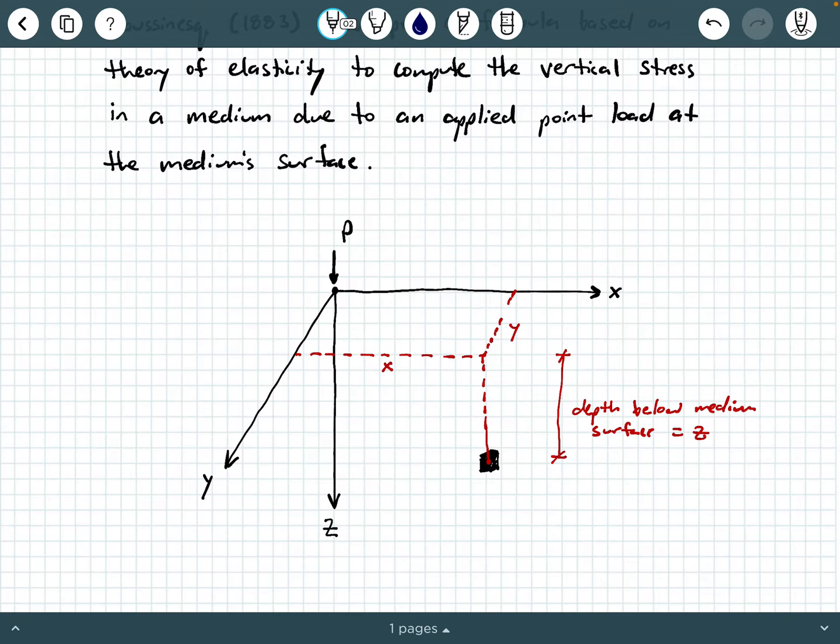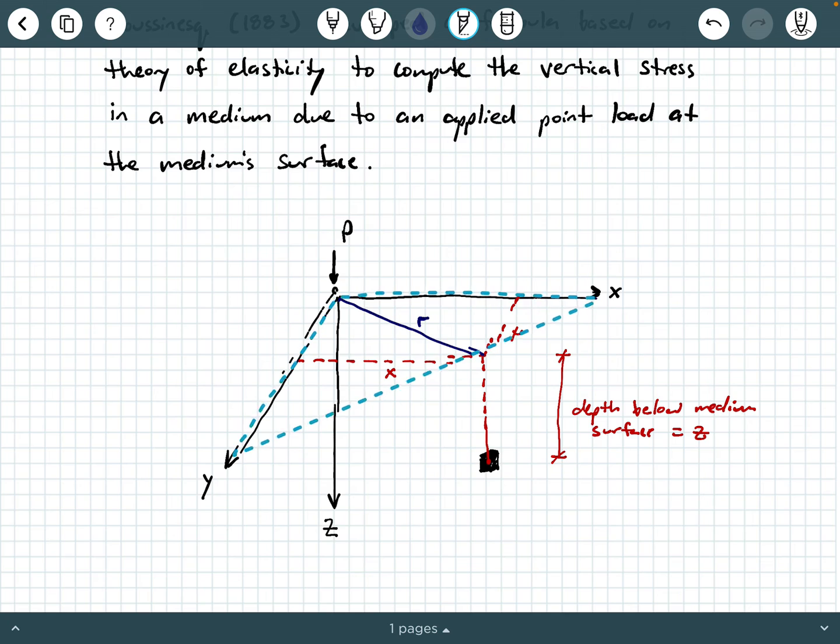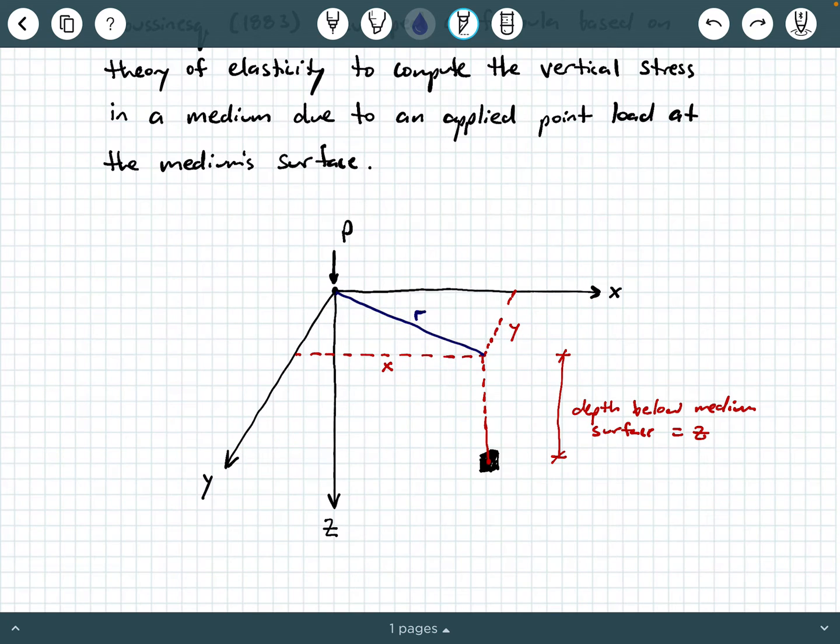Now, we're going to define a radial distance that's in the xy plane right here. We're going to call this r. So r, again, is a radial distance that's in the xy plane, so it's actually in two dimensions. And we're going to define another radial distance from the origin diagonally down to the point of interest, and we're going to call that L right here. And this, of course, will end up being a right angle. So L is actually in all three dimensions. It's extending from the origin down to the point beneath the ground surface.